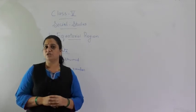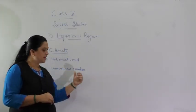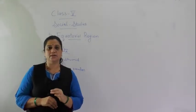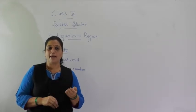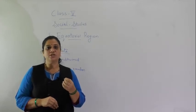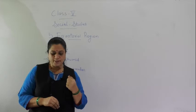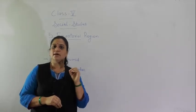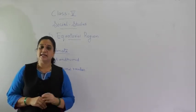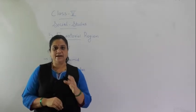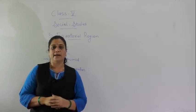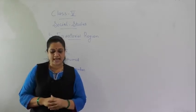Another feature of the equatorial region is conventional rainfall. When the sun heats up the earth, it causes warm air to rise up. This warm, moisture-laden air rises, cools, and condenses in the atmosphere to form clouds. Later in the day there is precipitation and it rains. This type of rainfall is accompanied by thunderstorms and lightning.